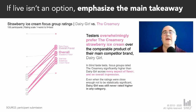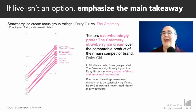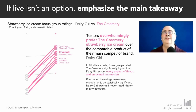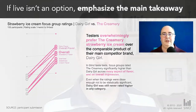And if I can't present it live to my impatient executive, I would still include all this data as annotation, but I would use bold text, big text, and bright color to make sure he doesn't miss the key takeaway — which is that testers overwhelmingly prefer the Creamery over its competition.